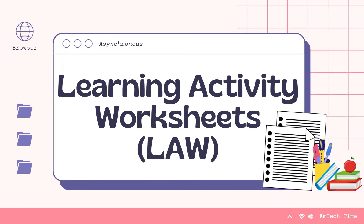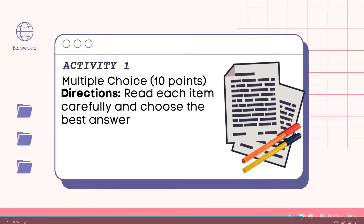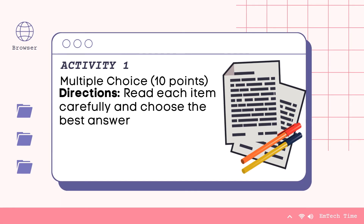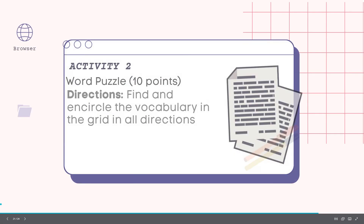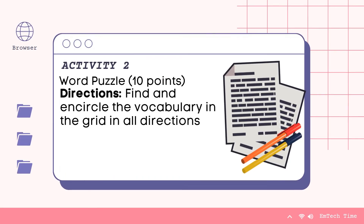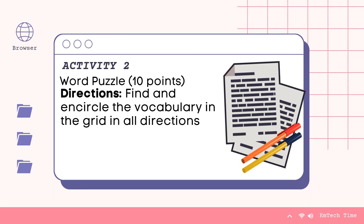Let's move on to answering our learning activity worksheets for this week. For Activity 1, it is a multiple choice type of test activity. Read each item carefully and choose the best answer. You can write your answer on a separate sheet of paper. The next activity is Activity 2, which is a word puzzle worth 10 points also. You need to find and encircle the vocabulary in the grid in all directions. As a note, you do not need to answer Activity 3 for this week — you just need to accomplish Activity 1 and Activity 2.